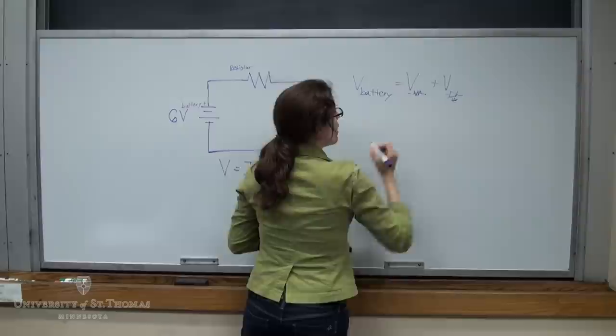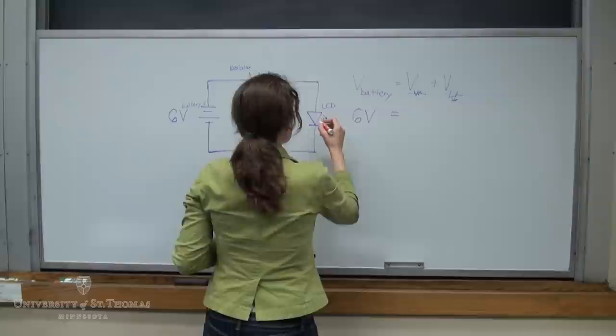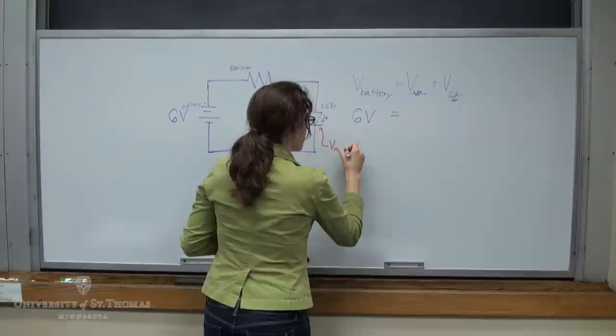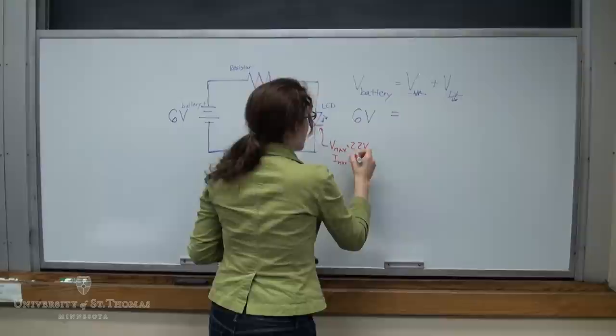Well, we know then that it's 6 volts for the battery. And for the red LED, when I went to the specification sheet, I found out that for my red LED, we'll use a red marker, for my red LED, it said that V max was 2.2 volts and my maximum current was 35 milliamps.